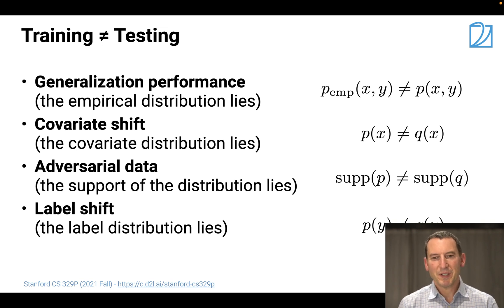Now there are actually many reasons why that could be the case. For instance, we might train on an empirical dataset and then test on the proper distribution, or we could have proper covariate shift where the distribution over the covariates (the x's) is different between training and test set. You could also have adversarial data or outright label shift. In this class we're going to cover the first three of these aspects and defer the label shift to lecture seven and onwards.